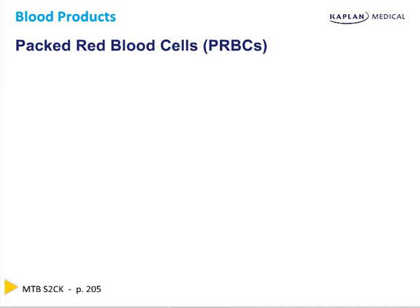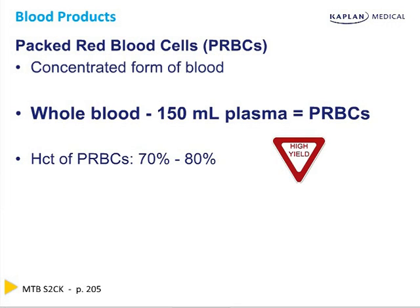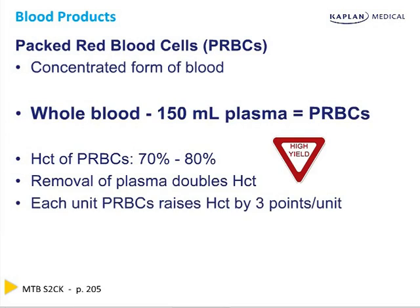Let's be 100% clear on when each blood product is used. Transfusion of red cells always means packed cells — a concentrated form of blood. If you take whole blood and remove the plasma, that's the packed cells, which is why the hematocrit in packed cells is around 70 to 80. Each unit of packed cells raises the hematocrit by three points.